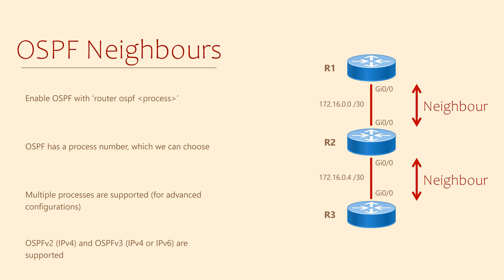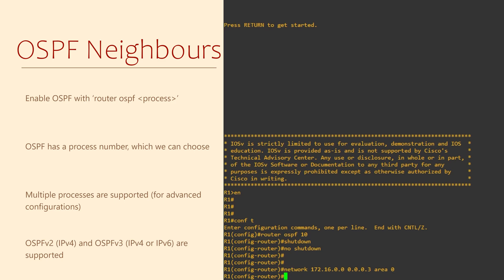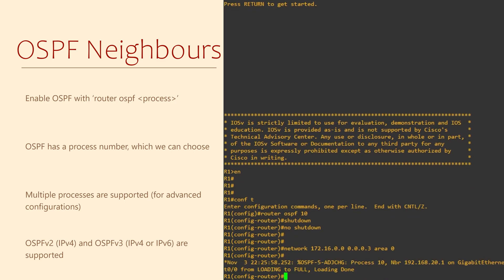They don't immediately become neighbors though — we need to add some more configuration first. We're going to add the command: network 172.16.0.0 0.0.0.3 area 0. Right away we get a message which means that R1 and R2 are now neighbors. This means that R2 has already been configured with the same commands.